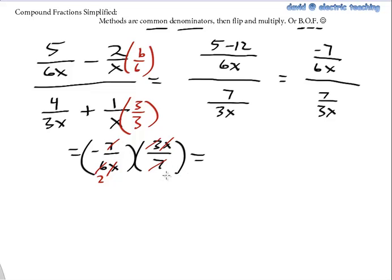We've canceled everything, in other words. And the only thing left is a 1 on top, negative 1, and a 2 on the bottom. So our answer is negative 1 half. Simplified very nicely. Lost all the variables along the way.